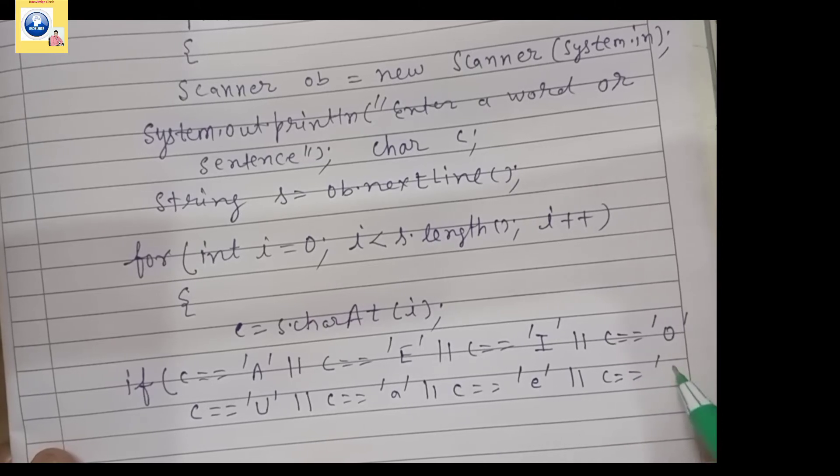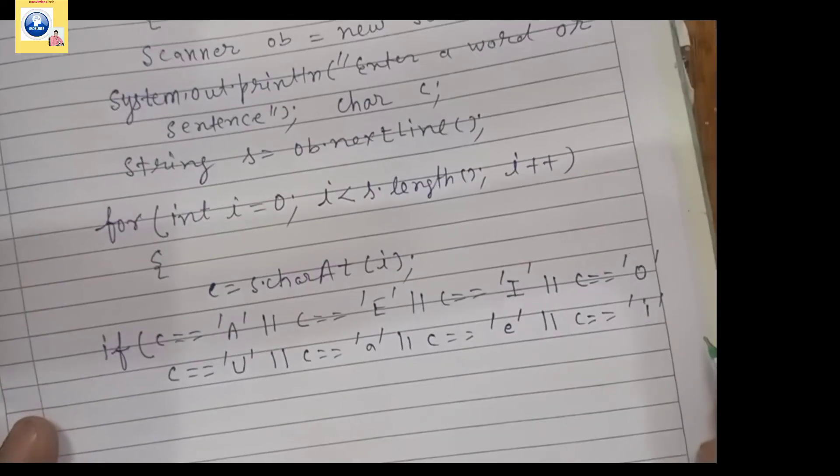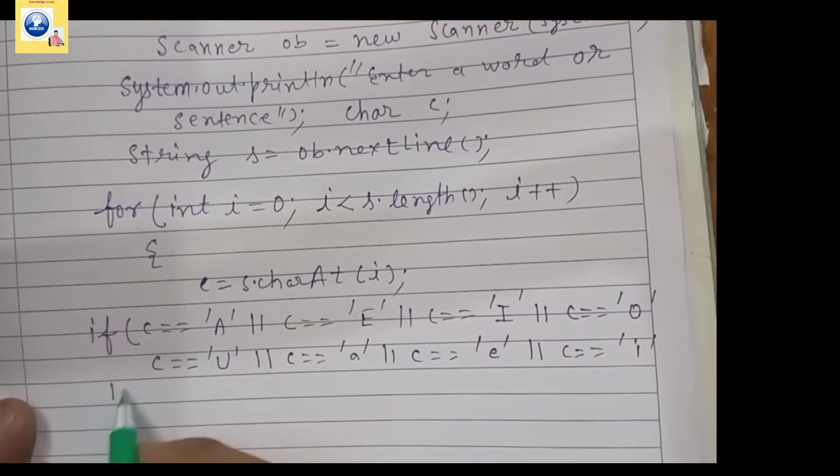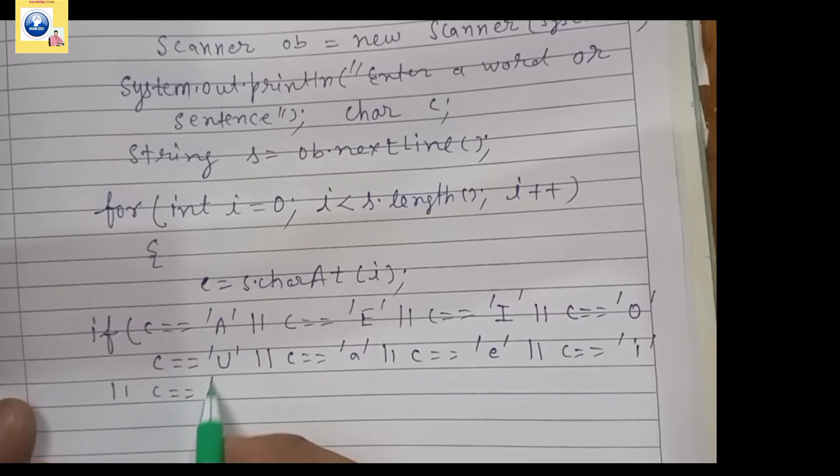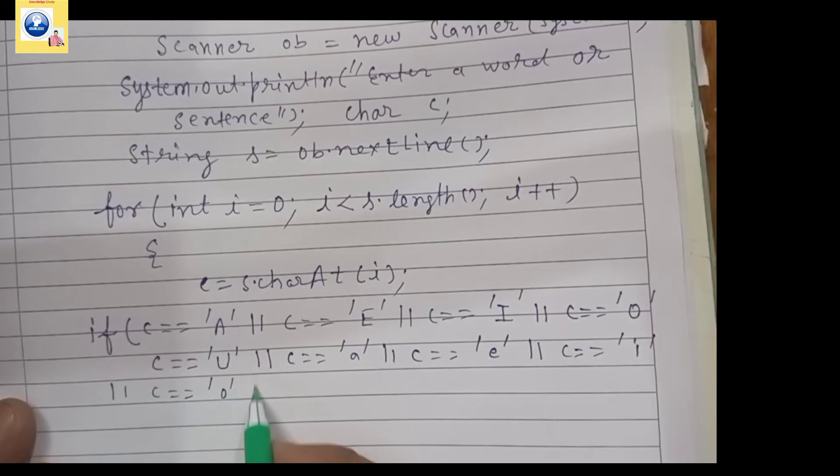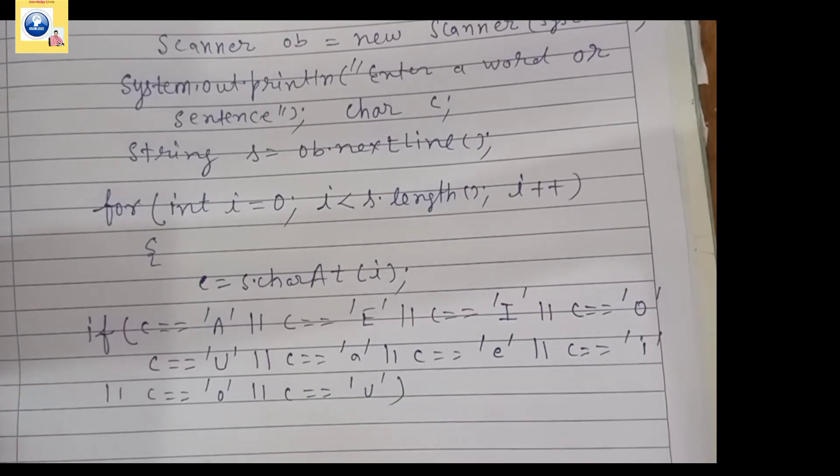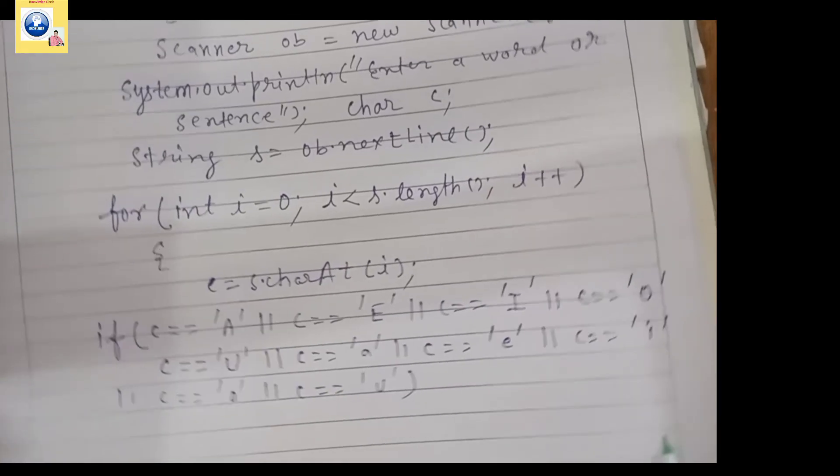And again or operator if c equals 'o', and the last if c equals 'u'. So in this way we did it 10 times. Our work is done.